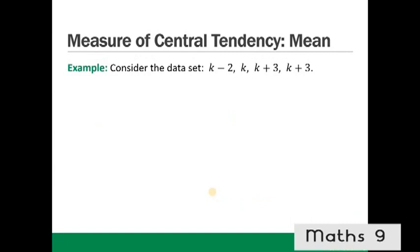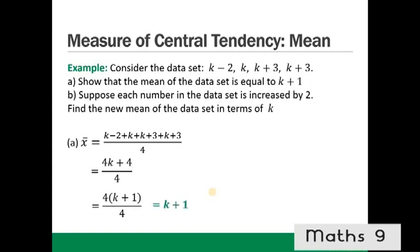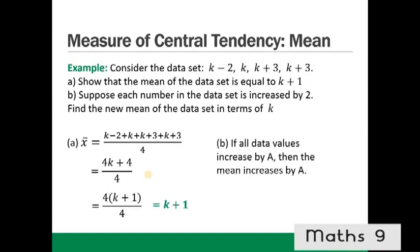Consider the data set: k−2, k, k+3, k+3. Show that the mean equals k+1. Mean = (k−2 + k + k+3 + k+3) / 4 = (4k+4) / 4 = k+1. For part B, if each number increases by 2, the mean also increases by 2, giving a new mean of k+3.